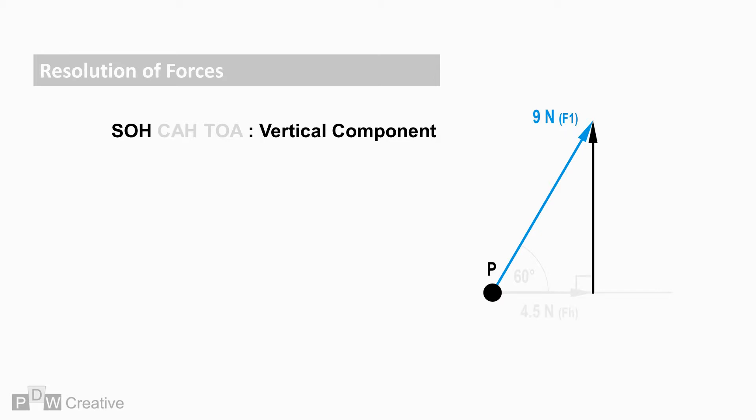For the vertical force, sine is used. Sine of the angle equals opposite over hypotenuse. This time, the opposite is required. The opposite equaling F1 times sine 60, which gives a vertical force of 7.79 newtons. The method of finding horizontal and vertical components becomes useful when a second force is acting.